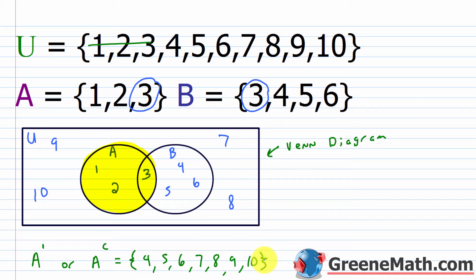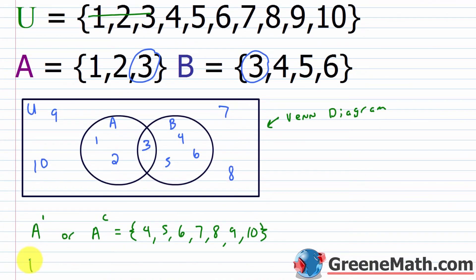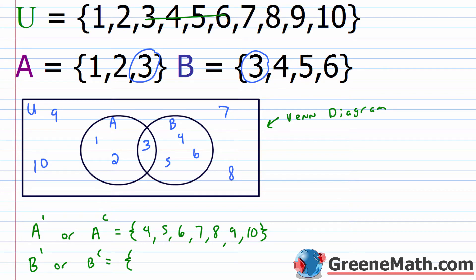As another example, let's take B complement — written as B prime or B with a superscript C. Since set B contains 3, 4, 5, and 6, I mark those out and B complement is 1, 2, 7, 8, 9, and 10. Or visually, I look at my Venn diagram — everything outside of the B circle is the complement of B, giving us 1, 2, 7, 8, 9, and 10.